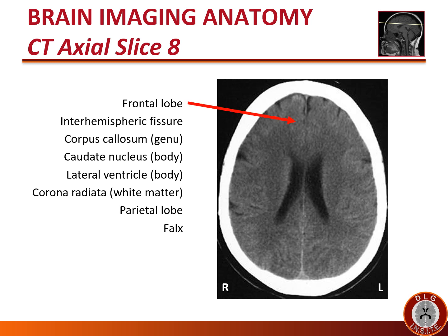The frontal lobe continues to be seen in the ventral aspect. We still see the black line of CSF between the two hemispheres — the interhemispheric fissure. Once again we see the band of white matter connecting the two hemispheres — the corpus callosum — and specifically the genu anteriorly. At this level one can appreciate the tail shape of the caudate nucleus, with the body of the caudate easily seen running along the lines of the lateral ventricle.